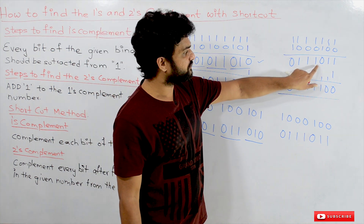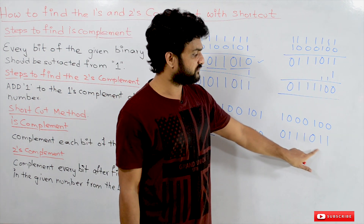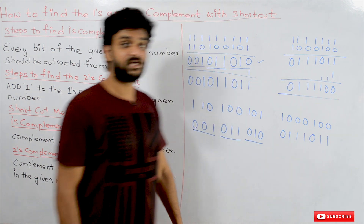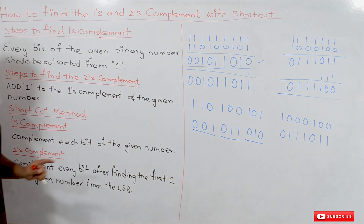Using the shortcut method, the ones complement of the second number is 0 1 1 1 0 1 1.